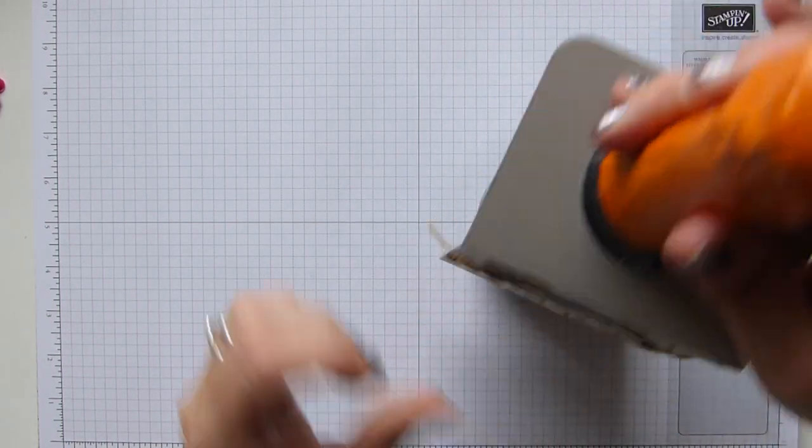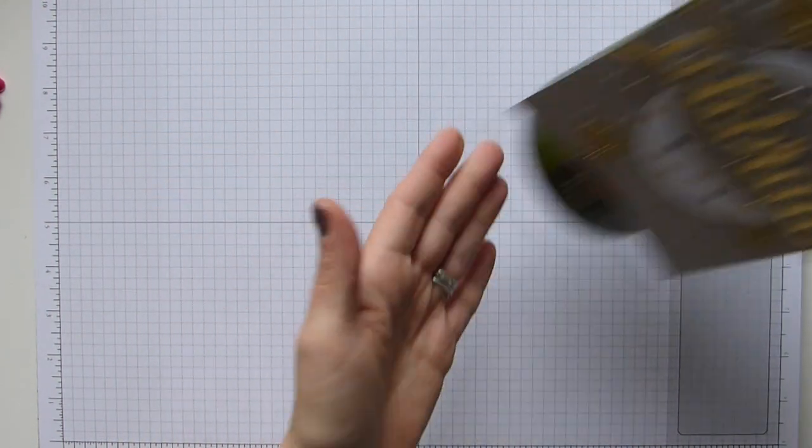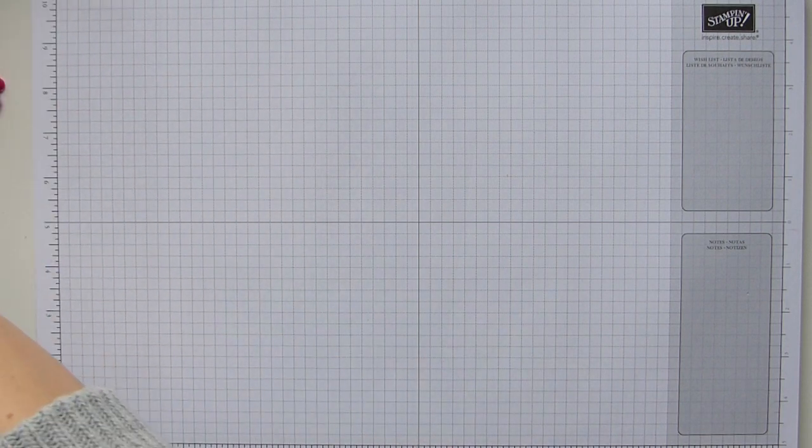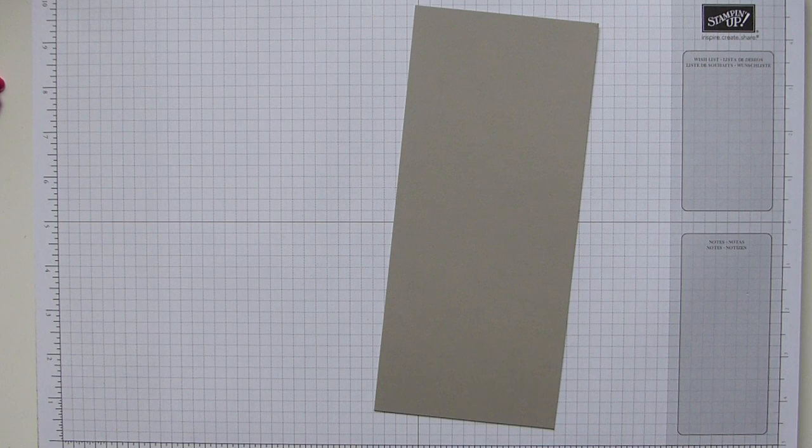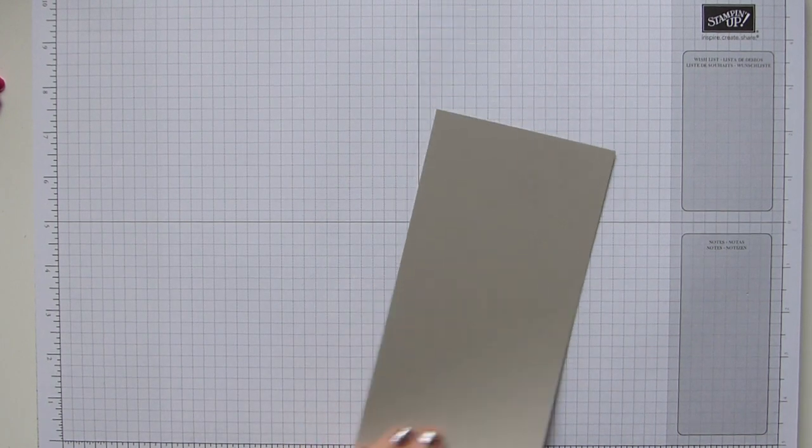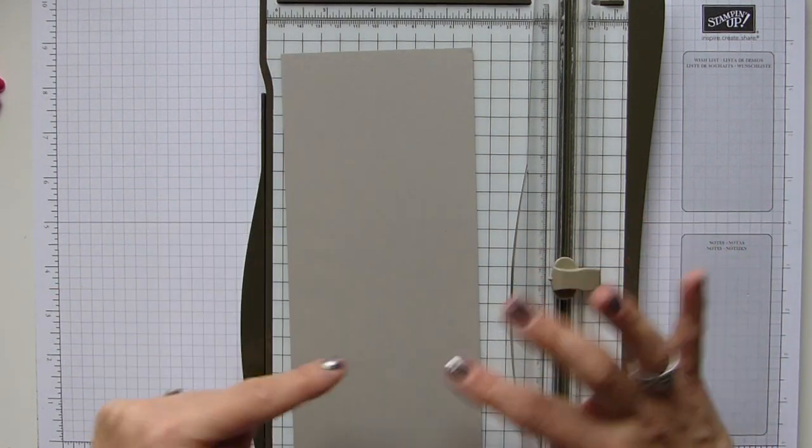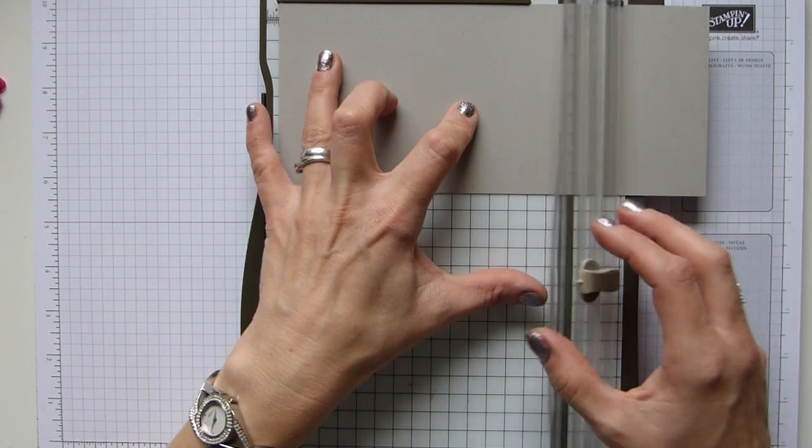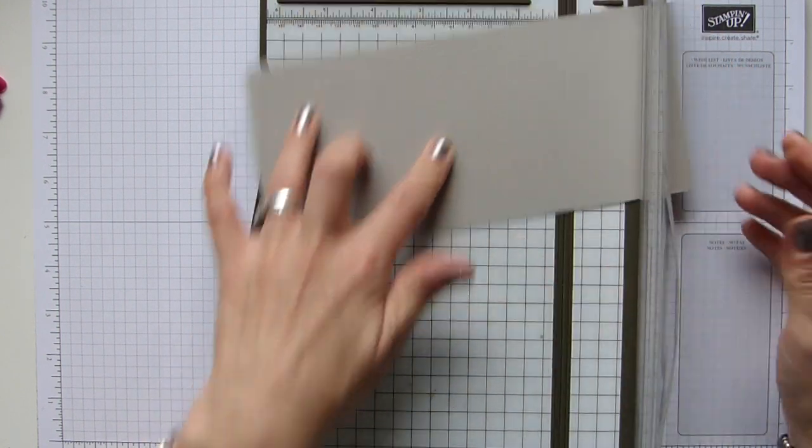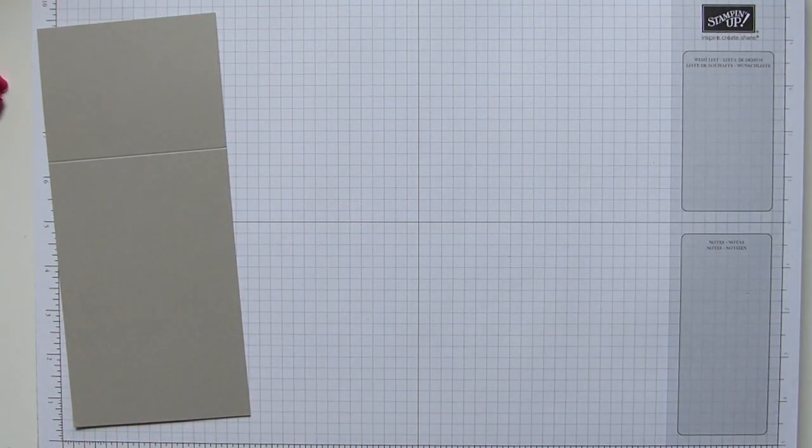So I'm going to show you how to make it. Let me start again with a deep breath. Your cardstock needs to be nine inches by four inches, which is 23 by 10 centimeters, and we are then going to score it at six inches, which is 15 centimeters. I'm using grey granite here because it goes with the DSP that I'm using.